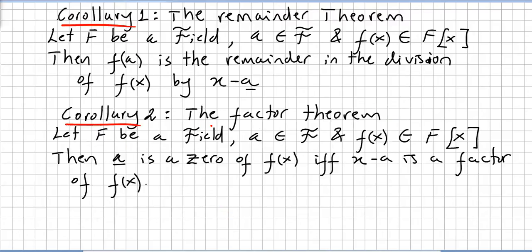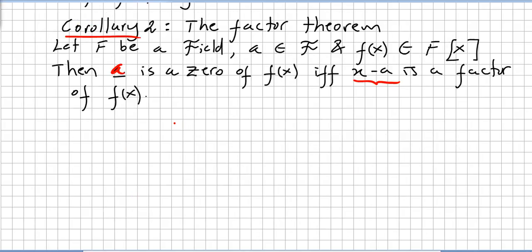The second corollary is the factor theorem. Let F be a field, a an element in the field, and f(x) a polynomial in the field of polynomials. Then a is a zero of f(x) if and only if x minus a is a factor of f(x). This is like basic algebra. I will do the next corollary, a very important one, in the next video.